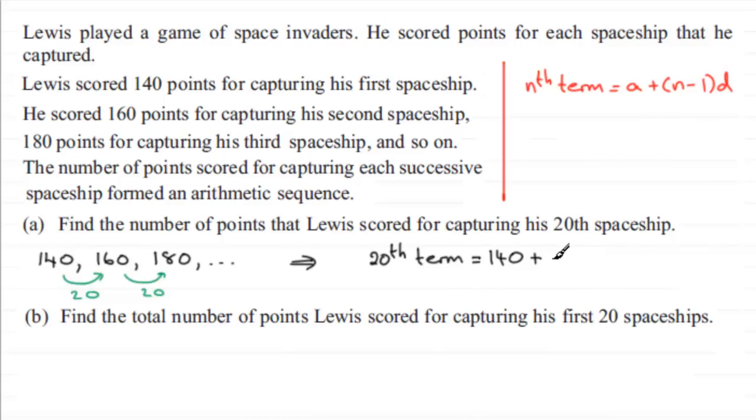The common difference is 20. If you work this out, you'll find you get 520 points.